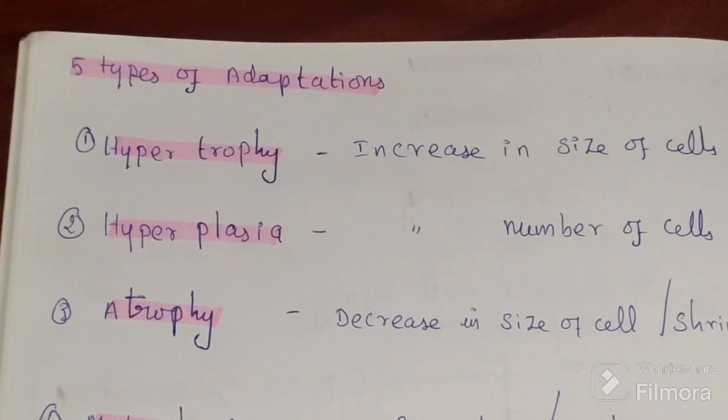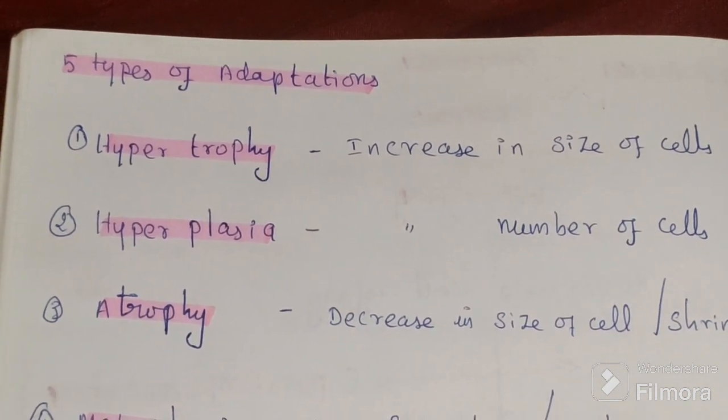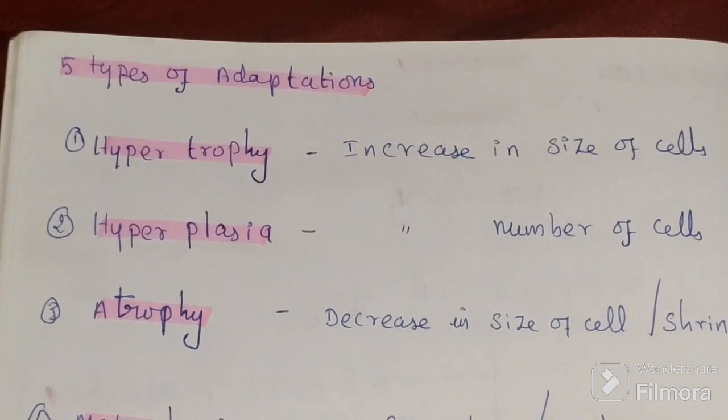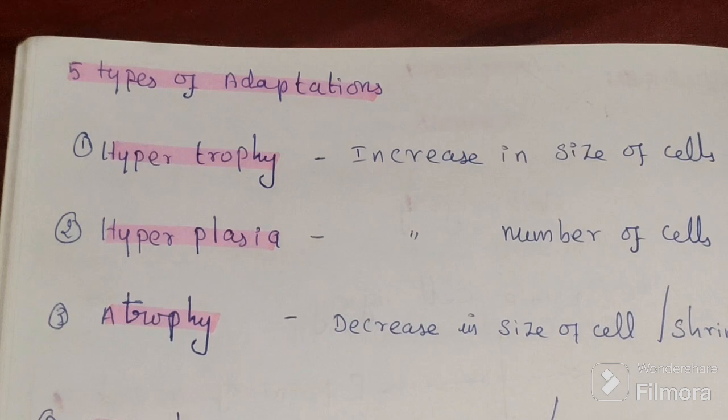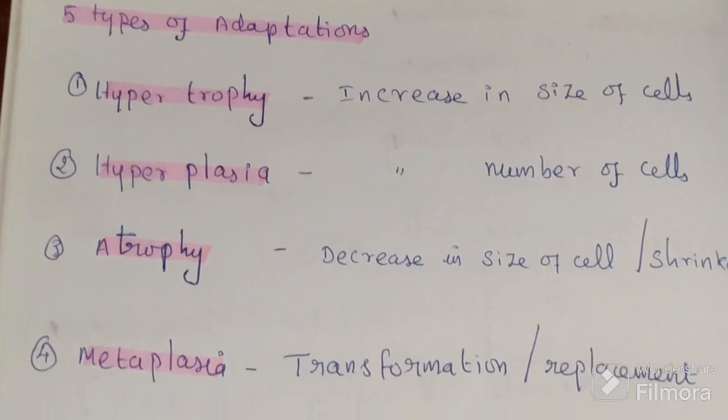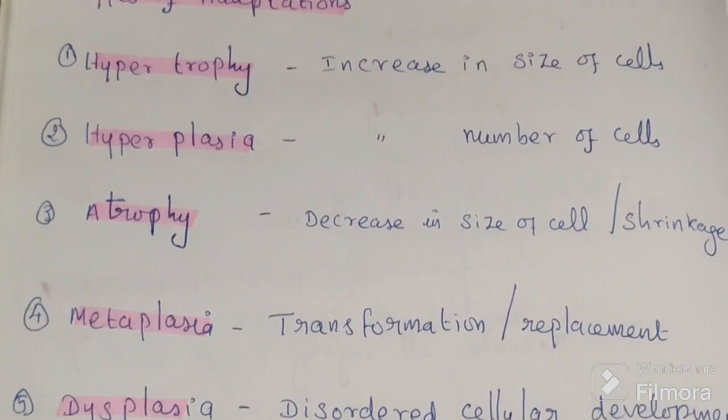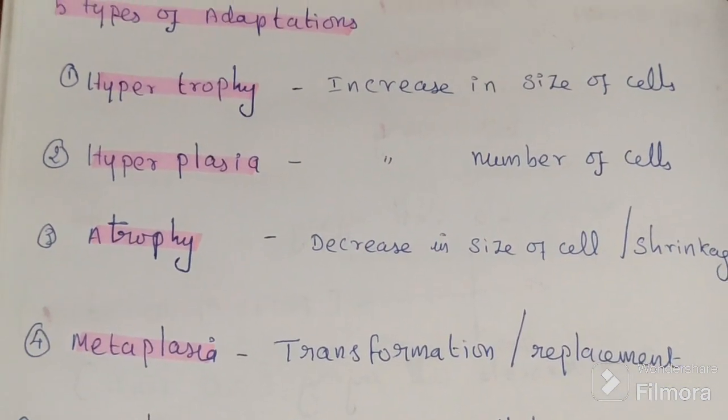Adaptation is a functional and structural response to physiological conditions — for example, pregnancy — or pathological conditions due to some disorder, during which a new but altered steady state is achieved, allowing the cell to survive and continue its function. There are five different types of adaptation.